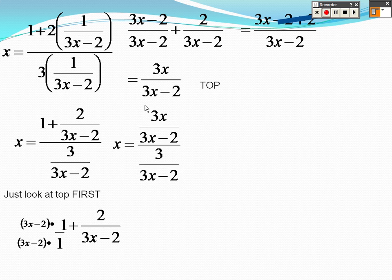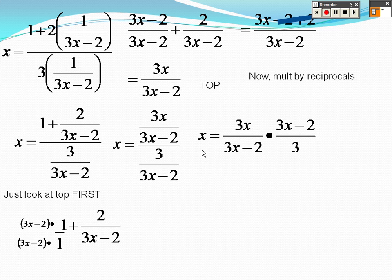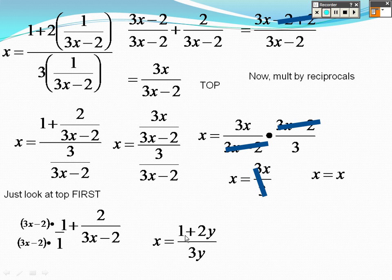Well, the bottom is 3 over 3x minus 2. So it's really, that's the top, and there's the bottom. If I flip that, because it's like saying multiply by the reciprocal, when I do that, these cancel out because they're the same. The 3s cancel out then. So I do get x equals x. So far, so good.